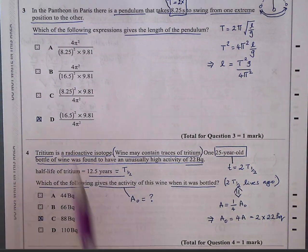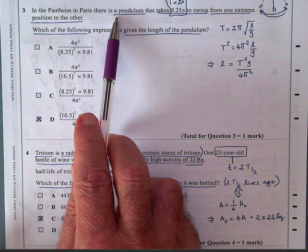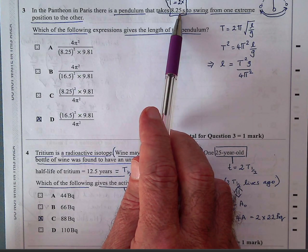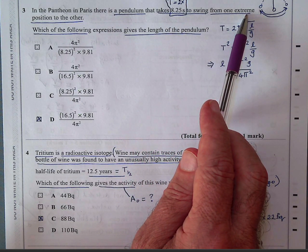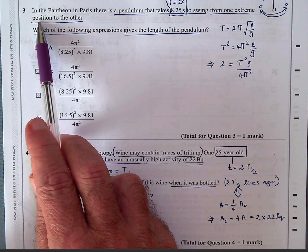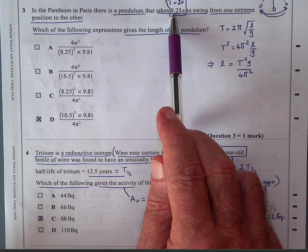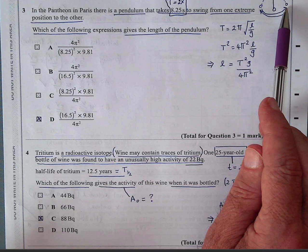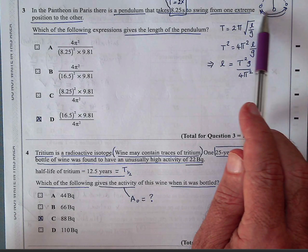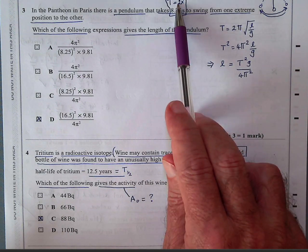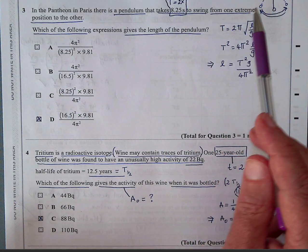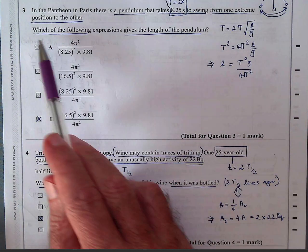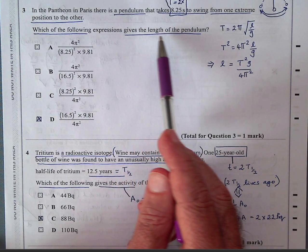Question three is about a pendulum. So in Paris, a pendulum that takes 8.25 seconds to swing from one extreme to the other takes 8.25 seconds. That means there must be a very big pendulum. So it goes 8.25 seconds there and 8.25 seconds back. So the period would be twice 8.25 seconds, because remember, period is to go one way and then return to the original starting point.